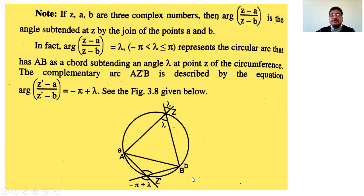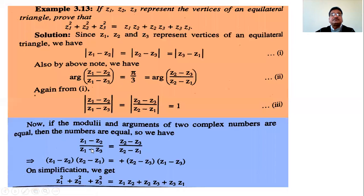The next example involves the argument of (z - a)/(z - b) equaling the angle λ between two complex numbers a and b. Example: z1, z2, z3 are the vertices of an equilateral triangle. Prove the given identity. Since they form an equilateral triangle, all three side lengths are equal: |z1 - z2| = |z2 - z3| = |z3 - z1|.